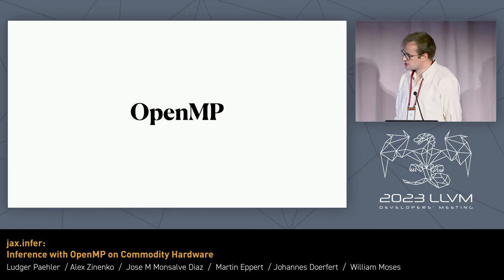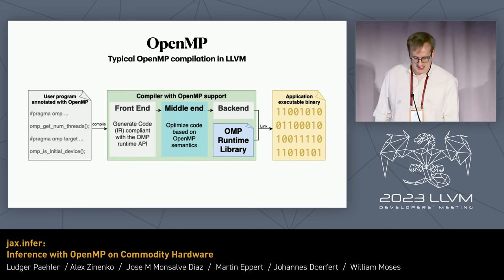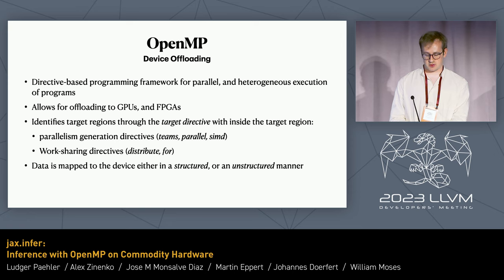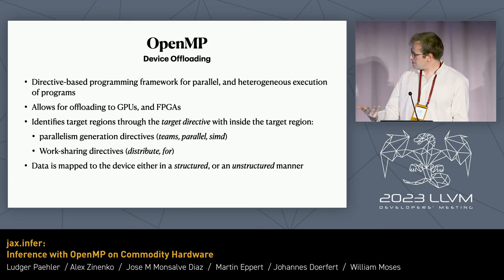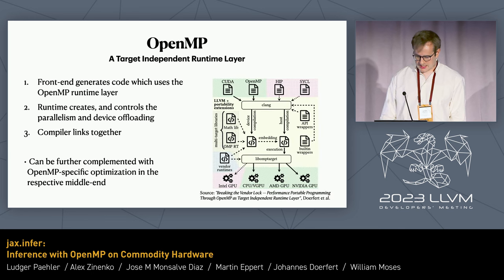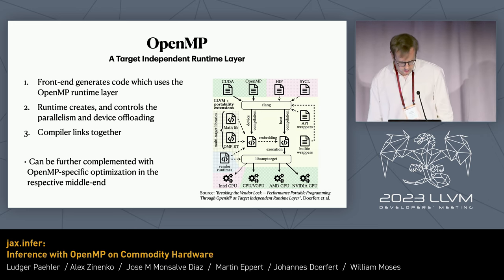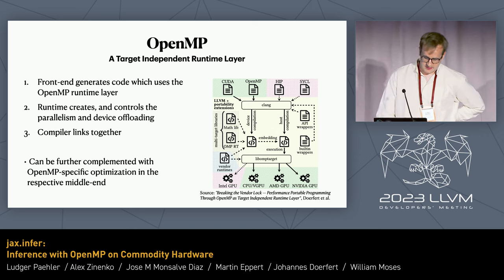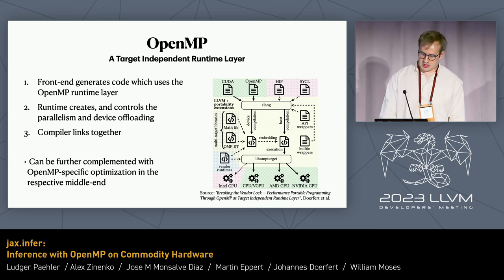Why do we really want OpenMP in this context? As a quick refresher: with OpenMP you have the pragmas and then the frontend, middle end, and compiler. What we really want mid to long term is device offloading — utilizing the work happening on the OpenMP side, using parallelism and worksharing directives, and generating OpenMP code. This is broadly in the spirit of 'breaking the vendor lock,' where the frontend generates code, the runtime creates and controls parallelism and device offloading, and the compiler ties everything together. Jose is heavily involved on the OpenMP side, so there's a lot we can benefit from.